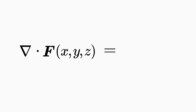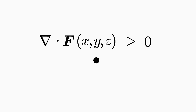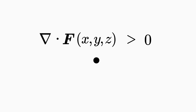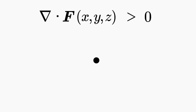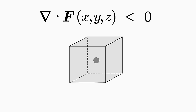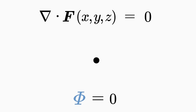The result at location (x, y, z) is no longer a vector, but a scalar which can be either positive, negative, or zero. If the divergence at location (x, y, z) is positive, then there is a source of the vector field F at this location; if this location is enclosed by a surface, the flux through the surface is also positive — the vector field flows out of the surface. If the divergence is negative, then there is a sink of the vector field F at this location. If the divergence disappears (equals zero), then that location is neither a sink nor a source of the vector field.